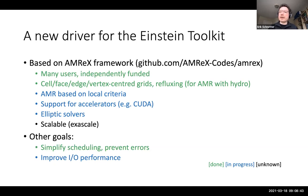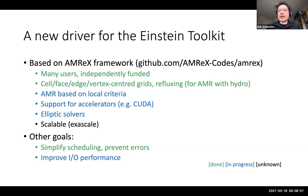Exascale scaling: I ran CarpetX on up to 1,500 cores with no problem, but 1,500 isn't interesting — you want at least 10 times as many to be interesting, and at least 100 times as many to actually be interesting. That still needs to be tested, though I don't expect any fundamental problem. Improving IO performance: we have a new file format from AMREX that should be more efficient, but that also hasn't been tested at scale.